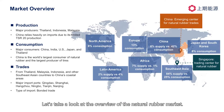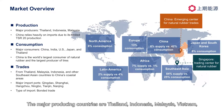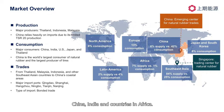Let's take a look at the overview of the natural rubber market. The major producing countries are Thailand, Indonesia, Malaysia, Vietnam, China, India, and countries in Africa.